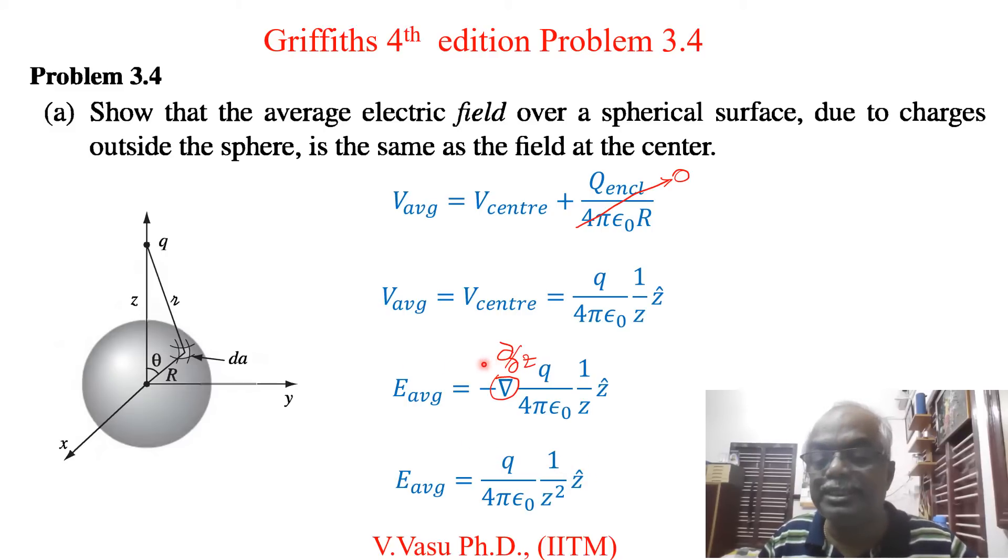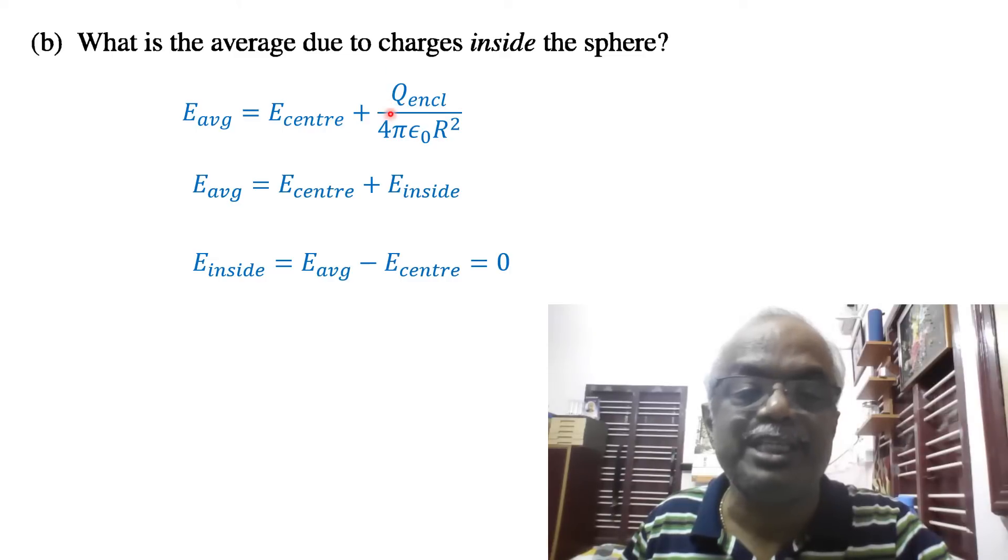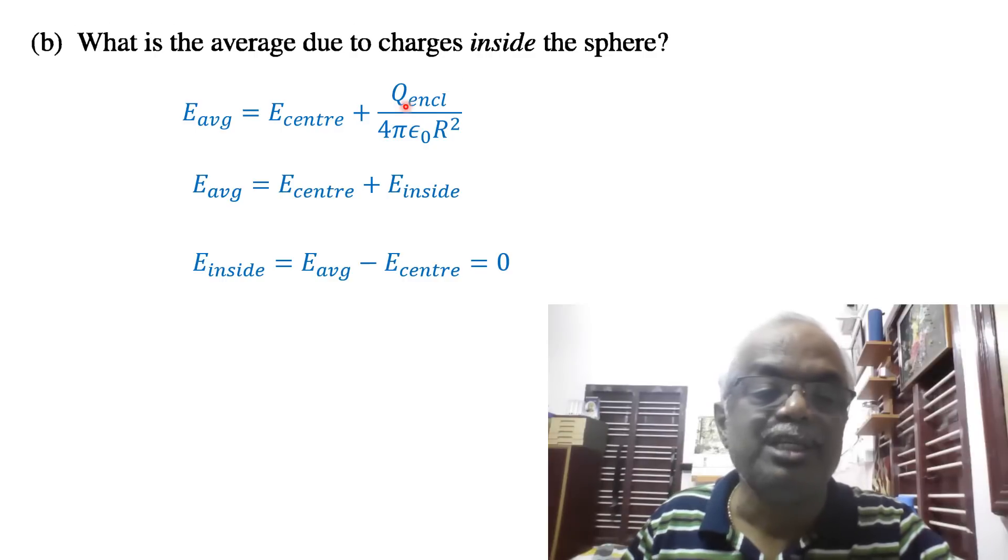Now we will see section B. Part B asks: what is the average due to the charge inside the sphere? In section A, the charge inside the sphere was zero. Here, there is a charge inside the sphere.